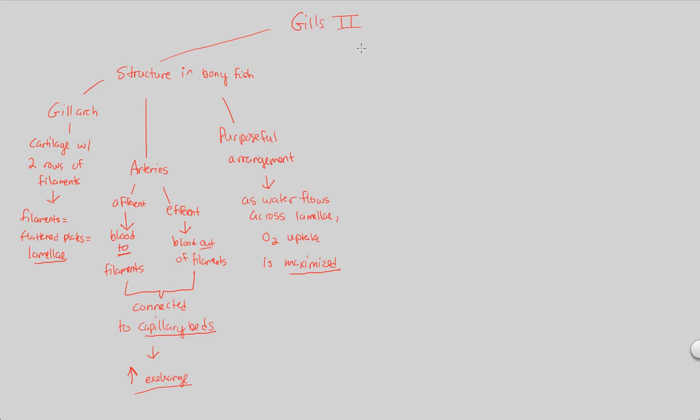Now what we want to conclude our discussion of gills on is the function, the true function of gills. The true function can be understood by looking at how gills really work, and that's through what is known as a counter-current exchange system. This is a very efficient way to do organismic respiration, respiration throughout the organism.